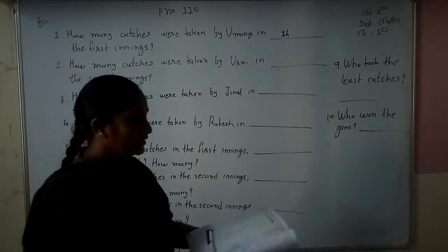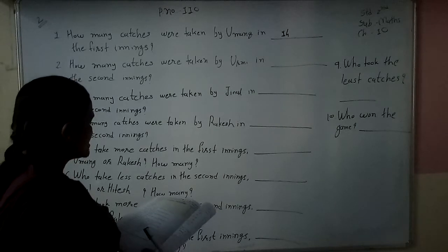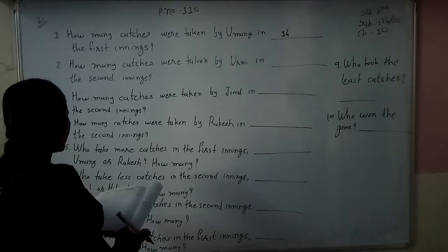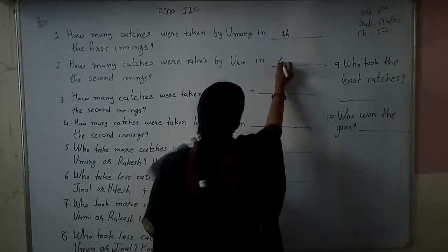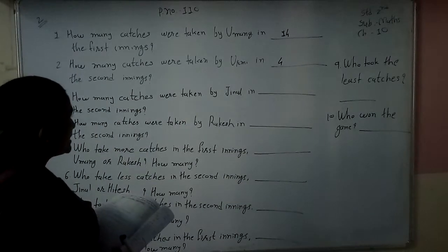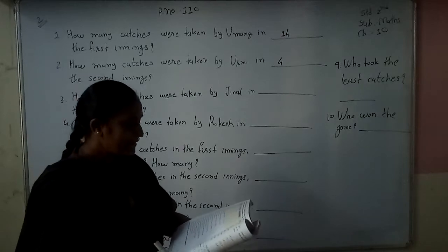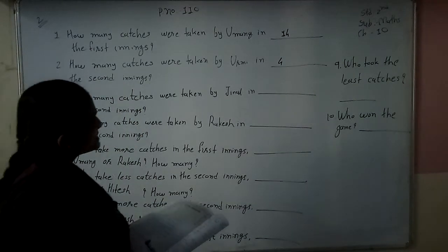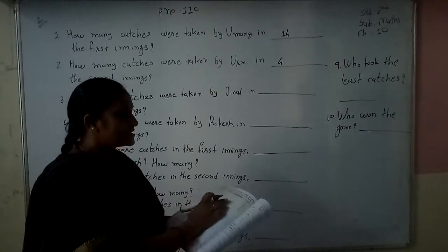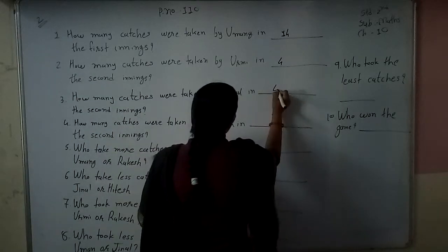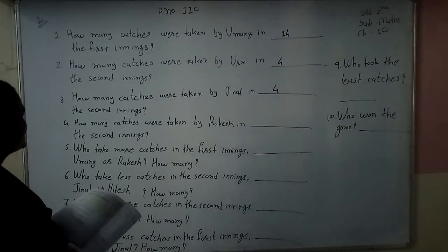We have to write the answer in only one or two words because there is no space. Second question: How many catches were taken by Umang in the second inning? Umang took 8 catches in the second inning. Gina also took 4 catches in the second inning.